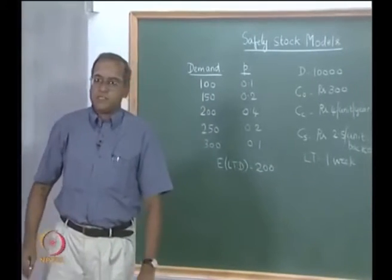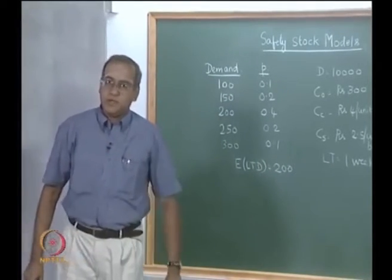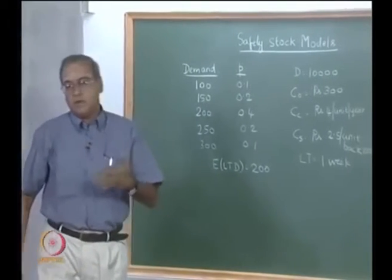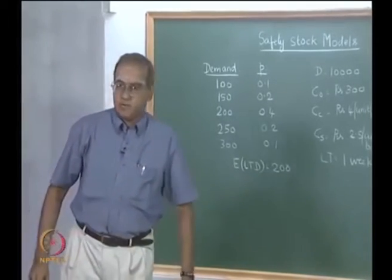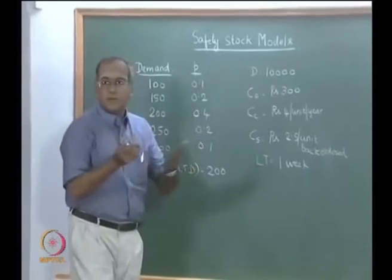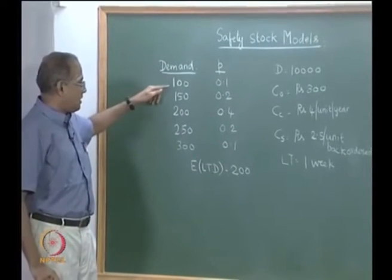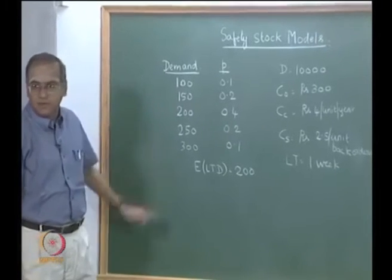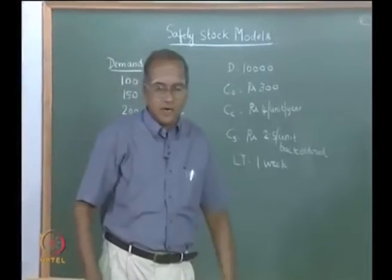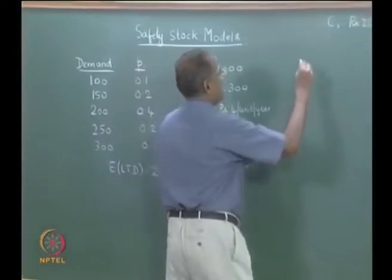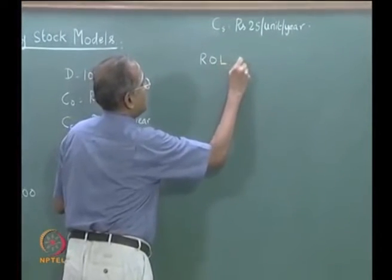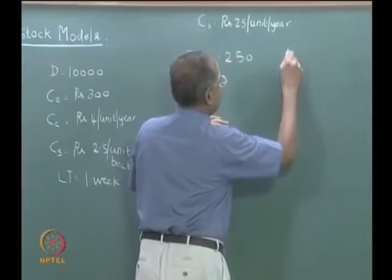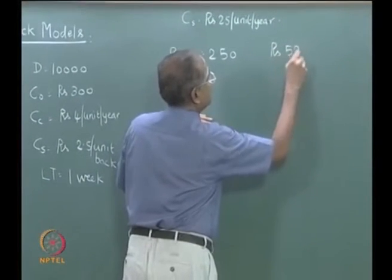We defined the reorder level as the level at which we place the next order, and the safety stock as the difference between the reorder level and the expected value of lead time demand. We showed total cost computations for reorder levels of 100, 150, 200, 250, and 300, and found that a reorder level of 250 was optimum, giving the least annual cost of rupees 5,200.